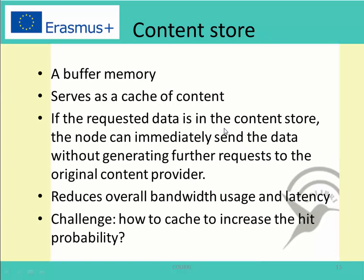The content store is simply a buffer memory which is used to cache the content. If the requested data is in the content store, the node can immediately send the data back to the user who requested the content, and it can act as a content provider. This is similar to caching in the current IP network. The advantage is that it reduces the overall bandwidth usage and latency. The challenge is how to cache effectively to increase the hit probability, and we cannot cache all content due to limited memory, so an efficient caching strategy is needed.